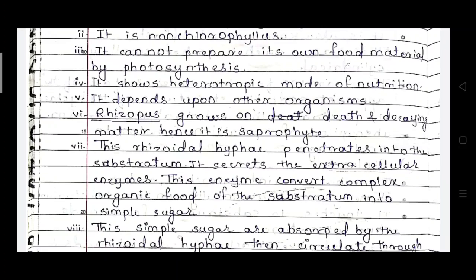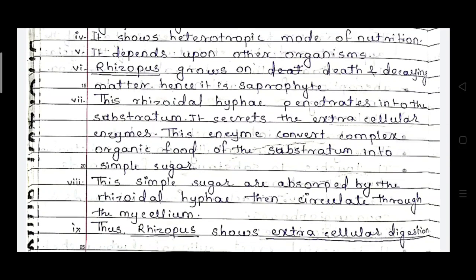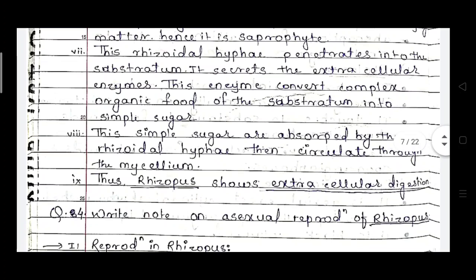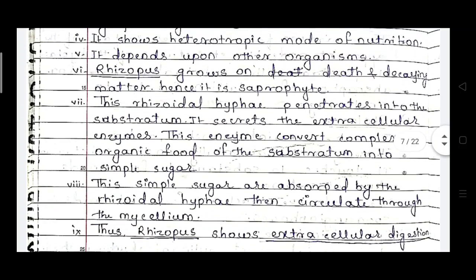Rhizopus depends upon other organisms — it grows on dead and decaying matter, hence it is a saprophyte. Rhizopus penetrates into the substratum and secretes extracellular enzymes. These enzymes convert complex organic food of the substratum into simple sugars. These simple sugars are absorbed by Rhizopus and circulate through the mycelium. Thus Rhizopus shows extracellular digestion.